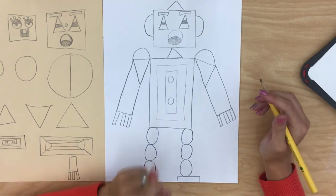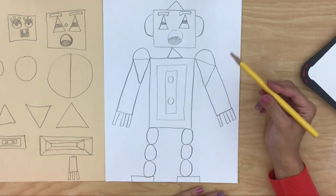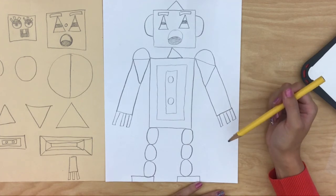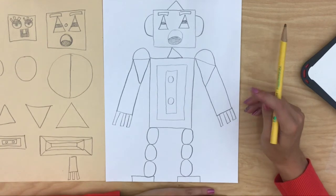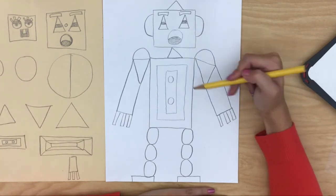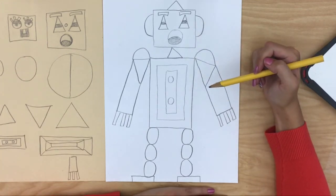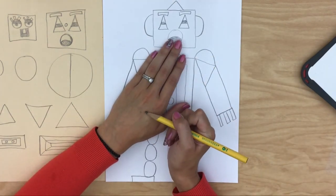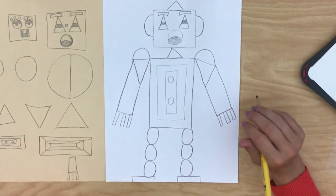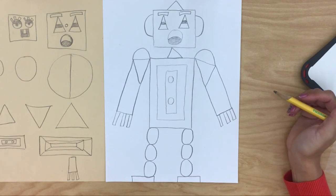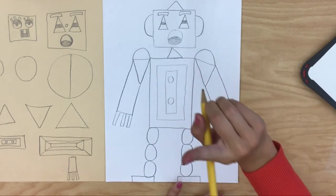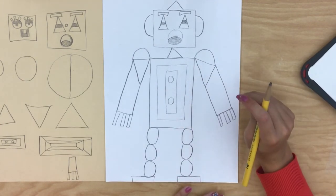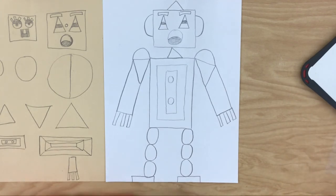I hope you have so much fun creating your shape robot. Remember, practice first is best before your final copy. Draw super lightly so that it's easy to erase. And if you make a mistake, it's okay. You could always turn it into something unique. I can't wait to see what you create.